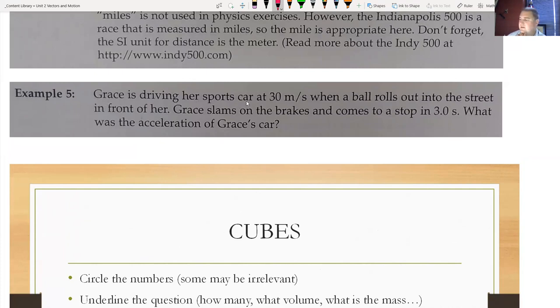Okay. So as you read this question, Grace is driving her sports car at 30 meters per second. That's going to be a number we're going to circle. When a ball rolls out into the street in front of her, Grace slams on the brakes and comes to a stop in three seconds. What was the acceleration? What was the acceleration of Grace's car? Okay. And keywords that you would want to box. So, I mean, she is driving maybe. So that gives you the idea that she's moving forward. When she slams on the brakes and comes to a stop, that could be a keyword because that's telling you that she is actually slowing down. Okay. And so that would be important to know for the question. Everything else here right now is extraneous. Okay.